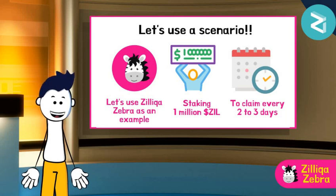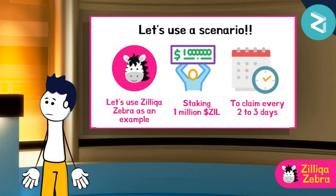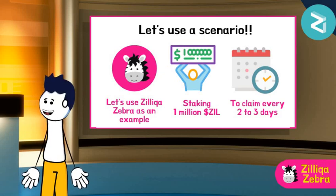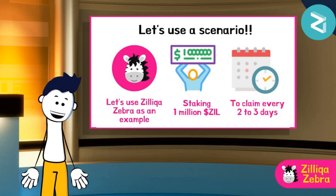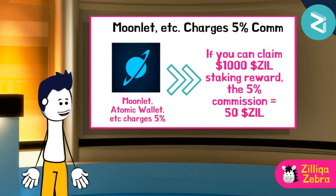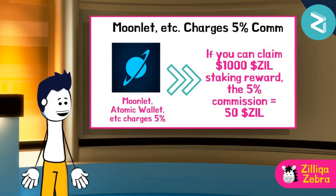To really understand the concept of transferring your staked ZIL, let us create an actual scenario using Zilliqa Zebra. Zilliqa Zebra is currently staking an amount of 1 million ZIL on the Moonlit Wallet app. He understands that he needs to ideally claim his reward every 2–3 days to optimize the compounding effect. Zilliqa Zebra understands that Moonlit, as well as Atomic Wallet, charges a 5% commission or fee for each claim.